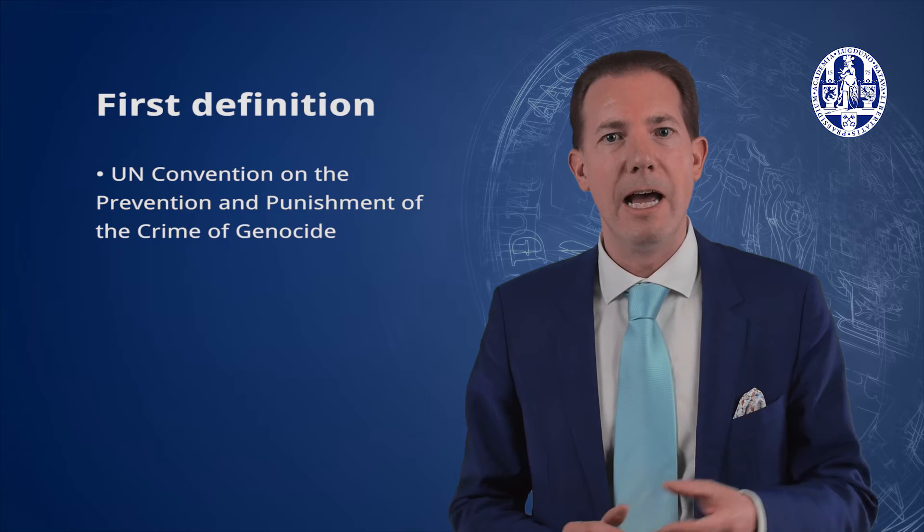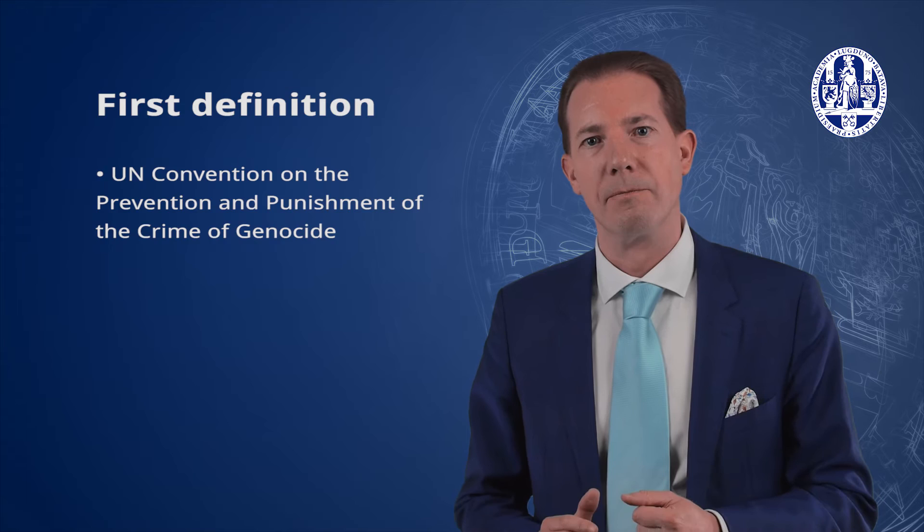One year after the Nuremberg judgment, the UN General Assembly adopted a resolution affirming that genocide is a crime under international law. The crime was defined for the first time in the United Nations Convention on the Prevention and Punishment of the Crime of Genocide – in short, the Genocide Convention. This definition is also reproduced in the statutes of the ad hoc tribunals and the International Criminal Court.